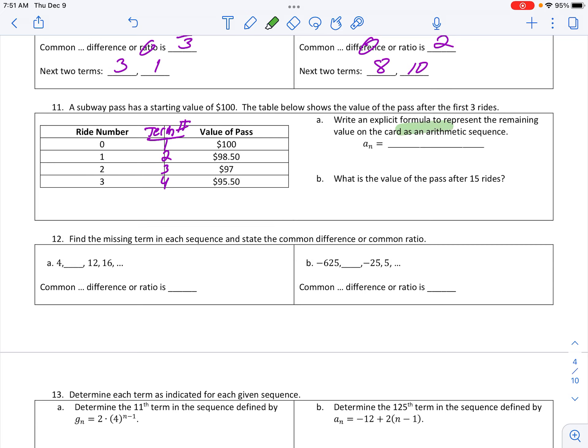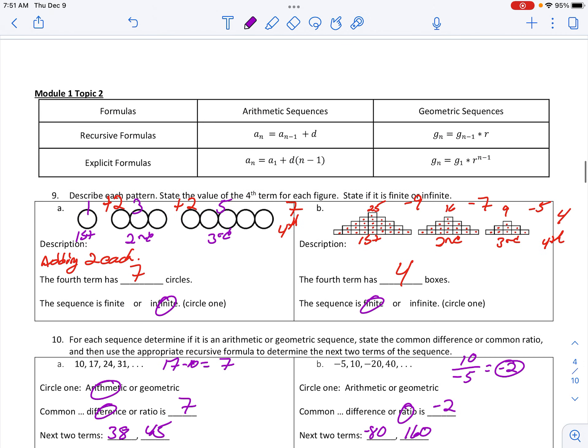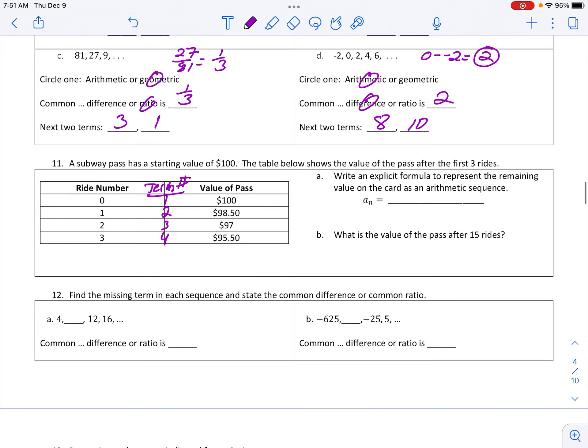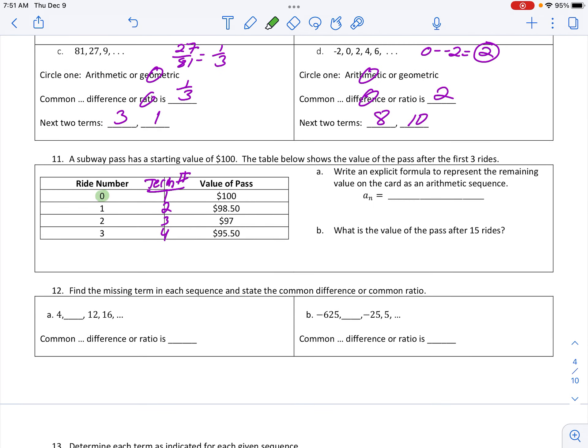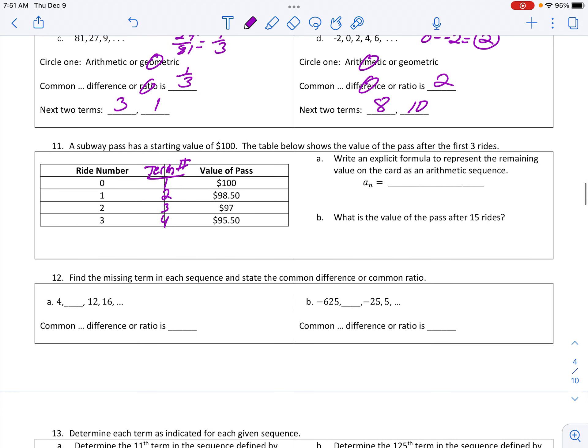Because when I get ready to write this formula, the explicit formula for the arithmetic sequence, that means we got to know what the first term of that sequence is. And what happens then is that's a little bit off from what we've seen before than the actual ride we've taken. We can see that we're off by one. So when I get ready to create this formula and then calculate the 15 rides, I got to first know where we're starting. We're starting off with a value of $100, and I got to know how we're moving. So how much money are we losing each time? We're subtracting $1.50.